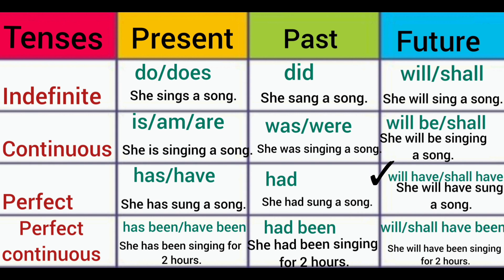For future perfect tense, will have and shall have are the helping verbs — she will have sung a song. For all perfect tenses, only the third form of the verb is used.